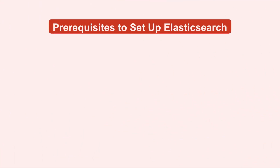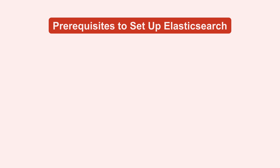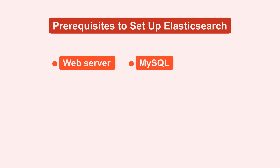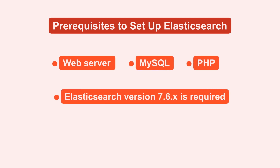Now, let's discuss the prerequisites for setting up Elasticsearch in Magento 2.4. You'll need a web server like Apache or Nginx, MySQL, and PHP installed. It's important to note that Elasticsearch version 7.6.x is required for all installations.